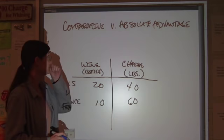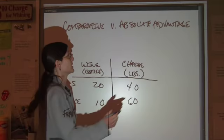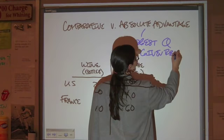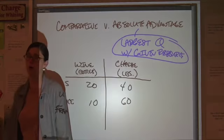So, for absolute advantage, we're just looking at who makes the most stuff. Largest quantity with given resource. Who makes more? They have the absolute advantage. That's why it's absolute. It's very clean cut.